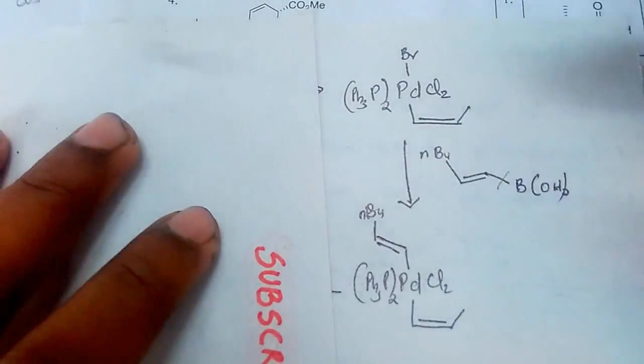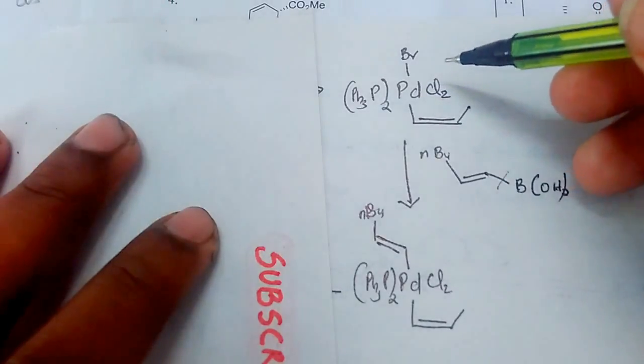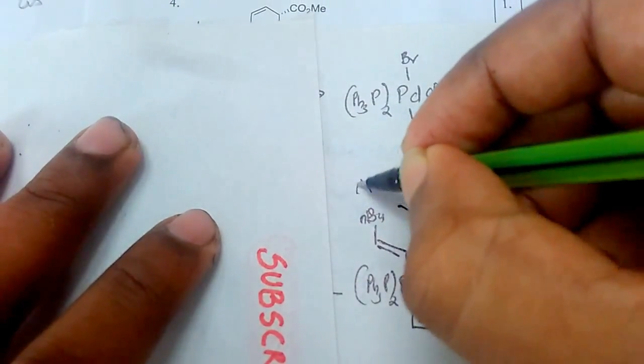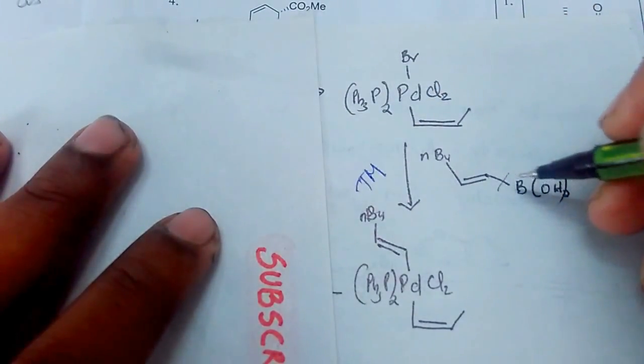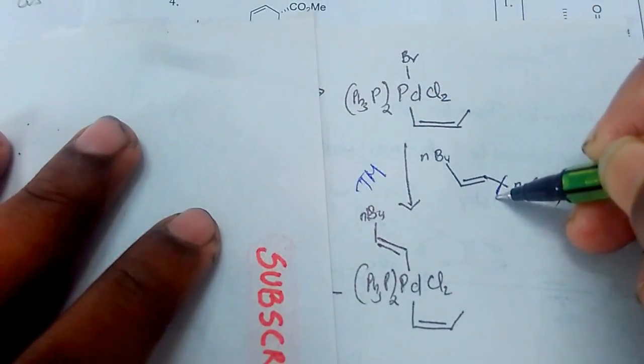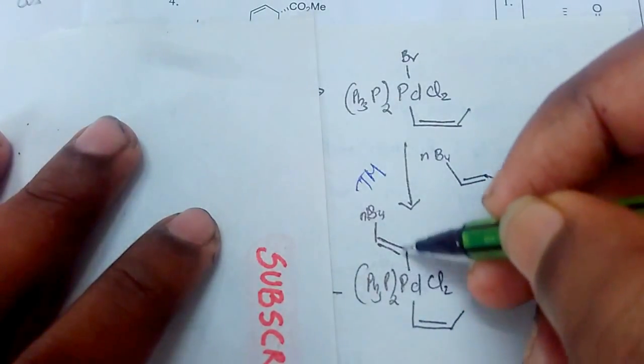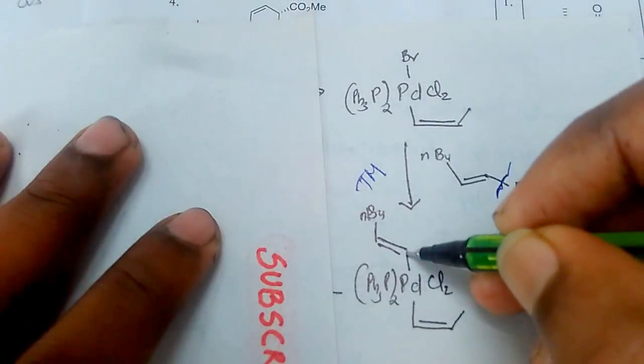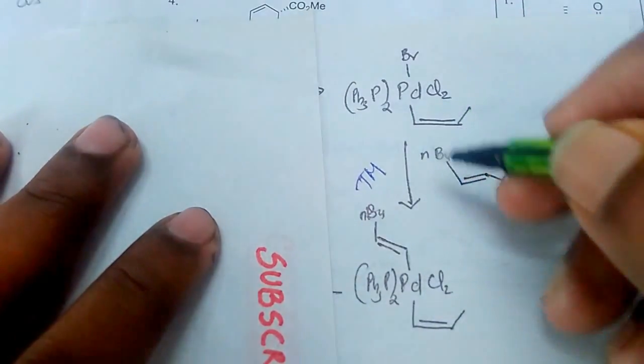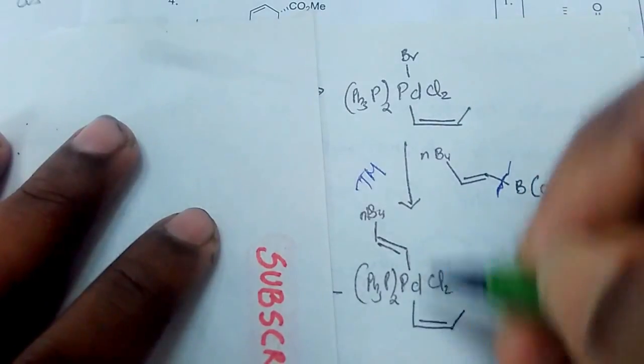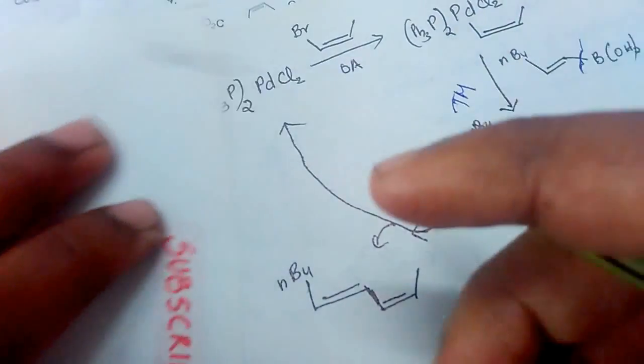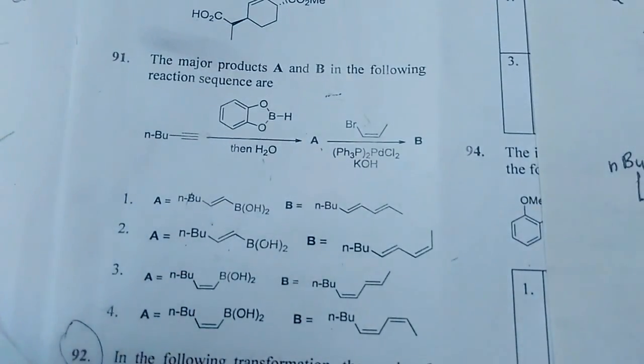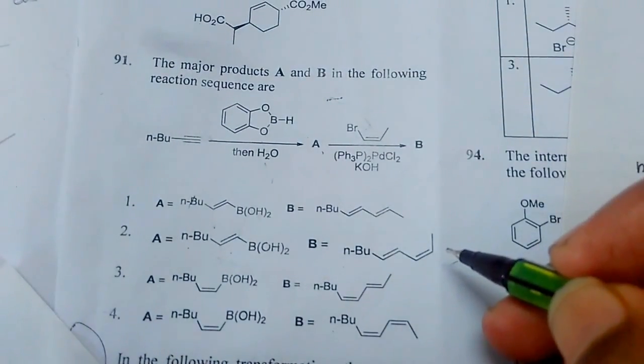On the addition of the second boron species, this transmetalation happens. Transmetalation is here happening, then the resulting product will be here. This is substituted over here like this. So in the reductive elimination, these two couple and form product like this. So the answer to our question is option two.